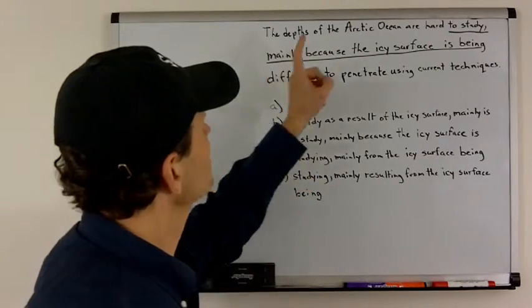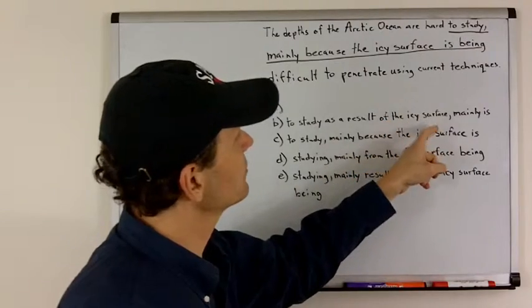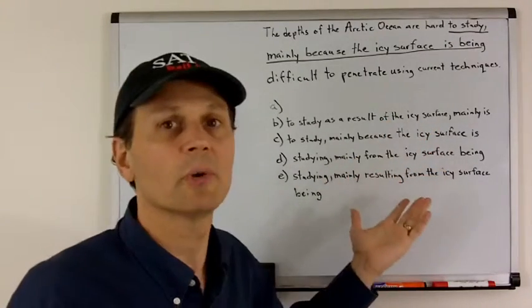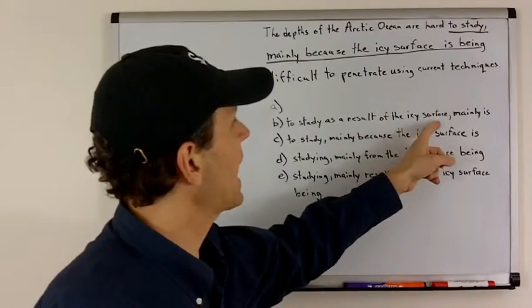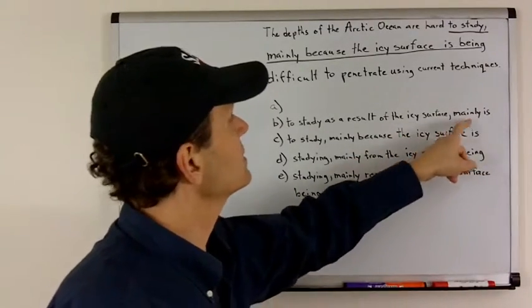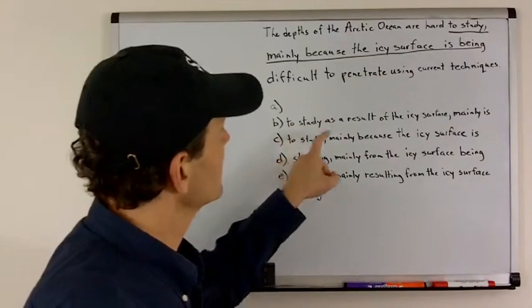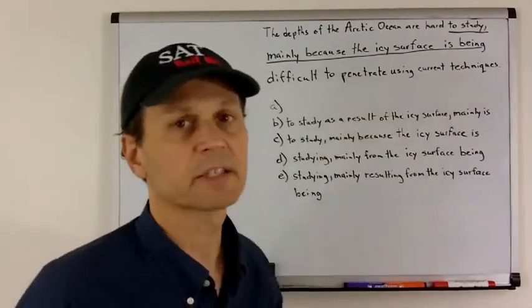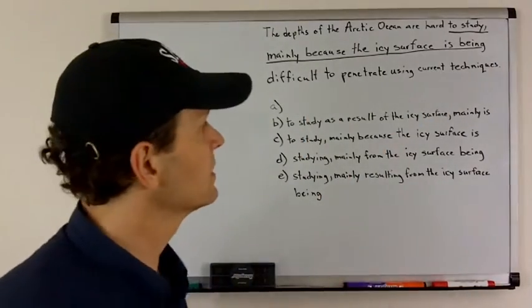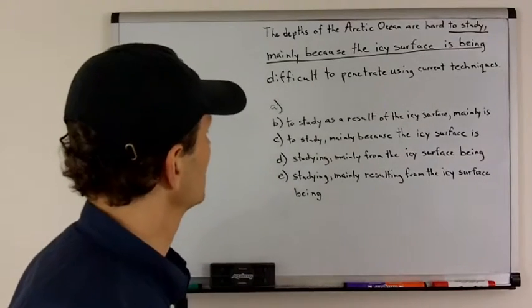Now, we go to the next one. The depths of the Arctic Ocean are hard to study as a result of the icy surface doing what? As a result of the icy surface, it kind of leaves us hanging there. Mainly is difficult to penetrate using current techniques. So, again, this kind of leaves us hanging and then we have this extra section of the sentence, which doesn't really hang together well. So, I would say B is not a good possibility.